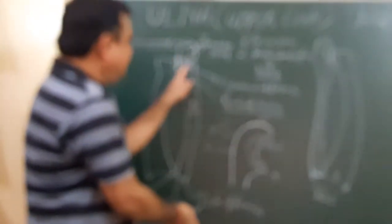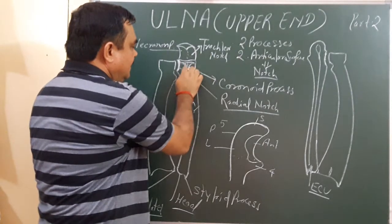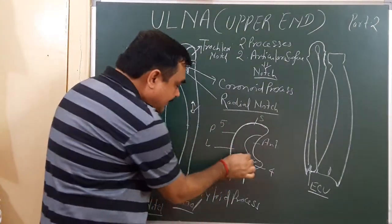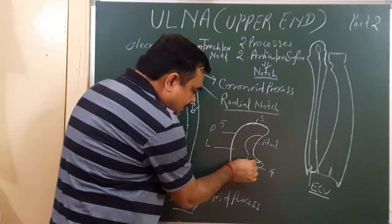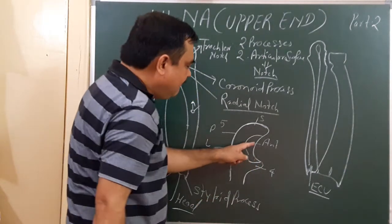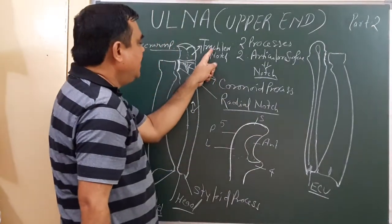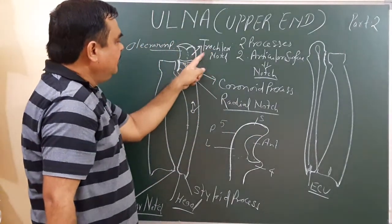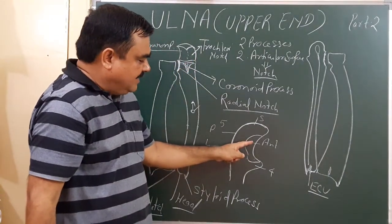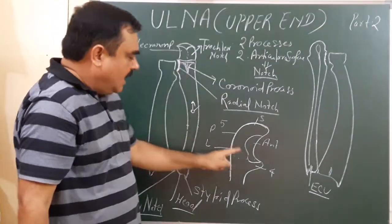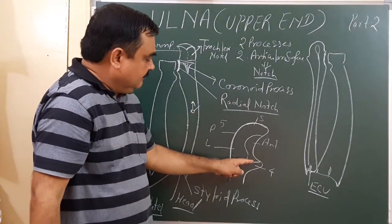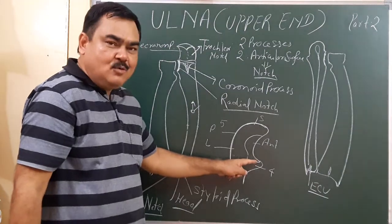This part is the coronoid process. It has a superior surface which is articular and forms the lower part of the trochlear notch. The upper part of the trochlear notch is formed by the anterior surface of the olecranon process, and the lower part is formed by the superior surface of the coronoid process.